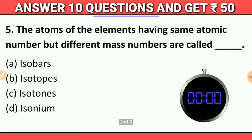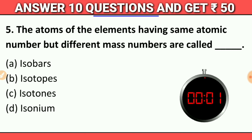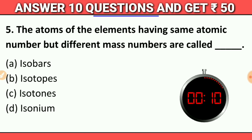Question number 5: The atoms of the elements have the same atomic number but different mass number are called — fill in the blank. Friends, the atomic number is the same but the mass number is different. The answer time starts now. Question number 5 answer time.